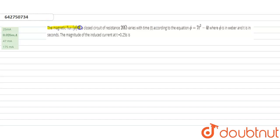The magnetic flux phi in a closed circuit of resistance 20 ohm varies with time t according to the equation phi is equal to 7t square minus 4.